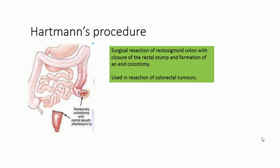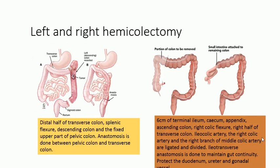Hartmann's procedure, described by French surgeon Hartmann, is mostly done for carcinoma of the rectosigmoid colon causing obstruction. The surgical dissection of the rectosigmoid colon and closure of the rectal stump is performed. The remaining other end of the colon is brought out as an end colostomy. It is basically used in resection of colorectal tumors.